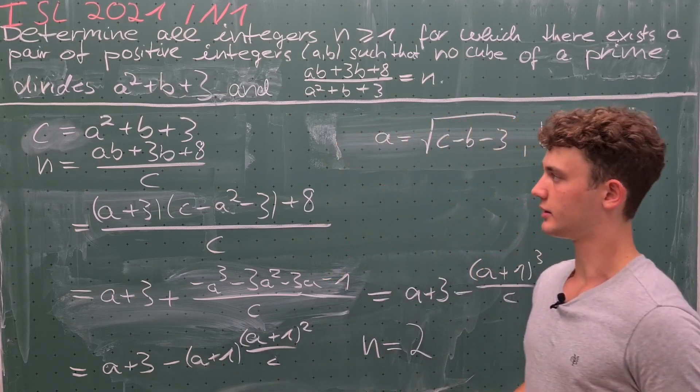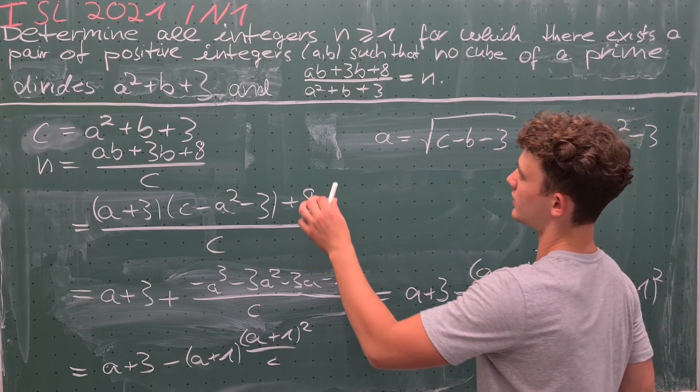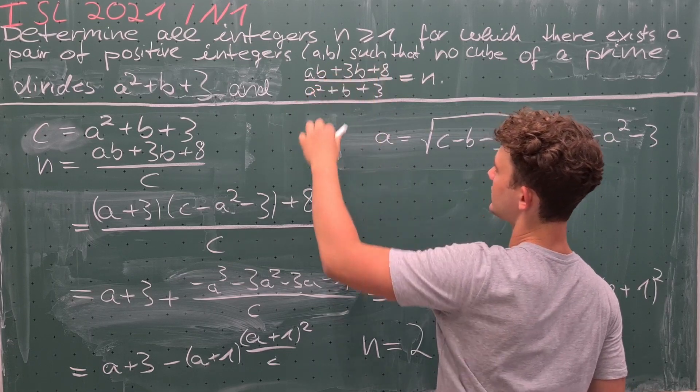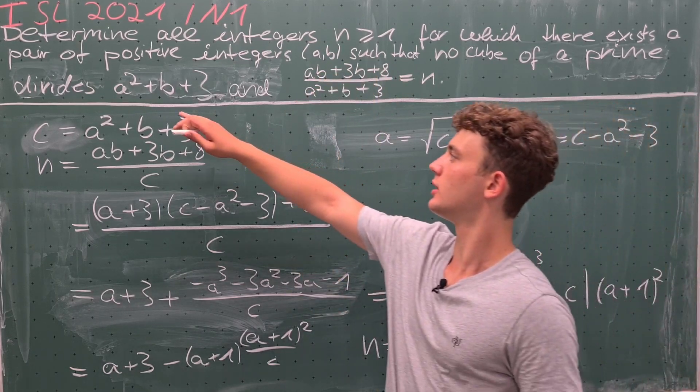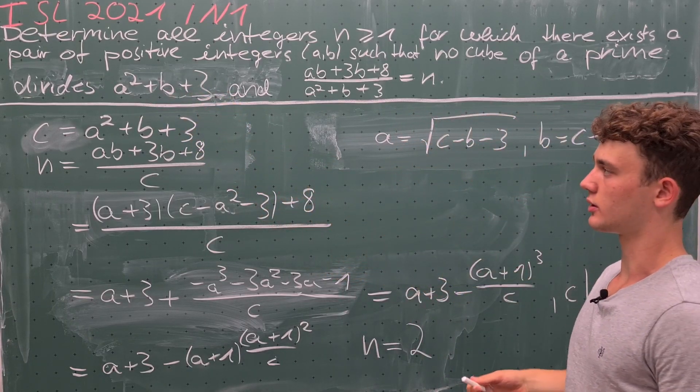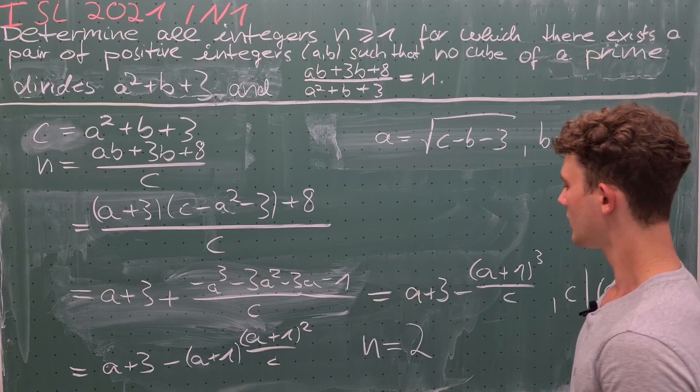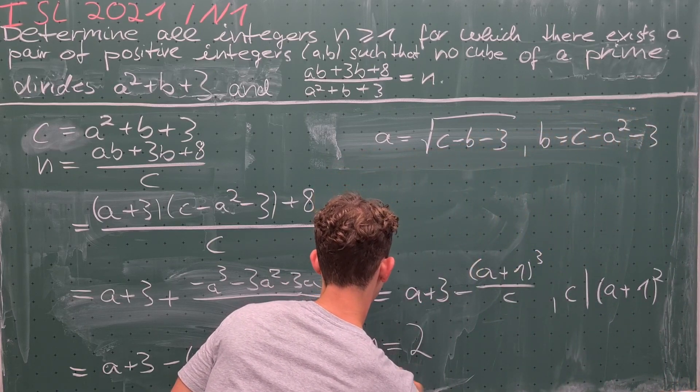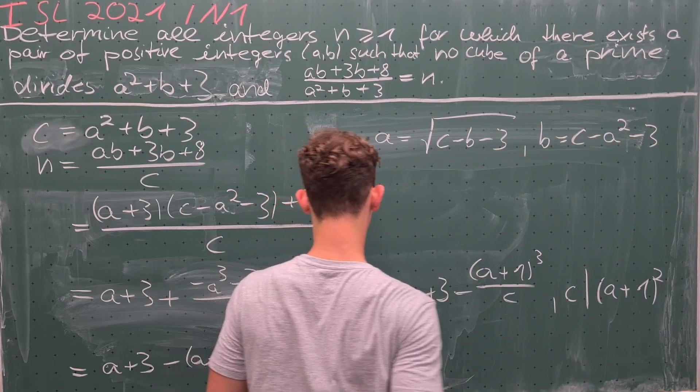We see that this is in fact a solution, because plugging in a and b equal to 2 yields this result. And also 2² + 2 + 3 = 9, which is not divisible by any cube of a prime. Therefore, n = 2 is actually a solution.